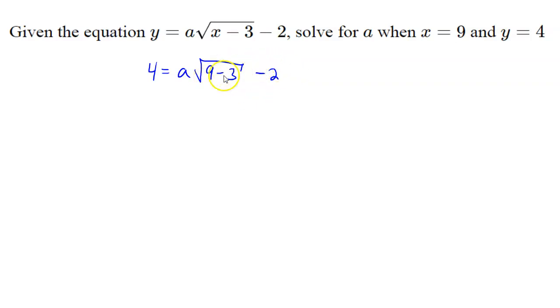And now we want to solve for a, which means simplifying first. So here inside of our square root, we can simplify by doing the subtraction. So 9 minus 3 is 6. And there we go. We got 4 equals a square root of 6 minus 2.